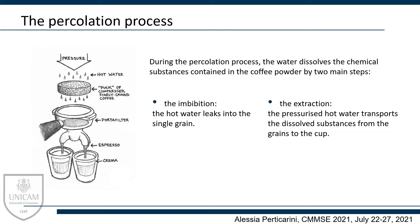The percolation process of espresso coffee consists in pressurized hot water that enters the filter basket filled with roasted ground coffee and flows through the empty spaces between the grains of coffee powder. During this process known as percolation, the water dissolves the chemical substances contained in the coffee powder by two main steps: the imbibition, where the hot water leaks into the single grain, and the extraction, where the pressurized hot water transports the dissolved substances from the grains to the coffee cup.